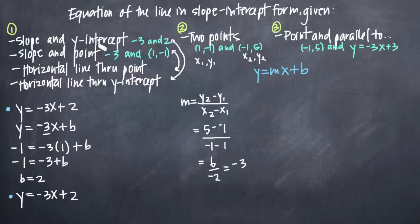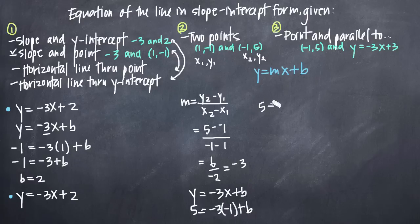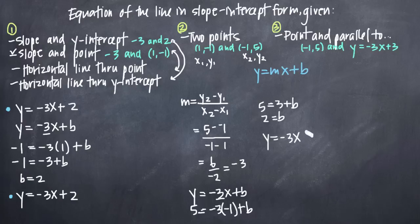Now that we have slope m, we're back to the same situation as category 1 — slope and a point. We can say y equals negative 3x plus b, plug in the slope, then plug in a point. Using the point (negative 1, 5): plug in 5 for y and negative 1 for x, and solve for b. We get 5 equals positive 3 plus b; subtracting 3 from both sides gives b equals 2. So we have y equals negative 3x plus 2 — right back to the same equation as before.